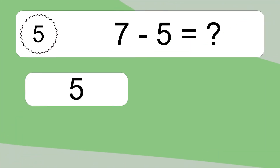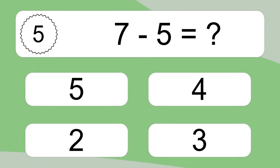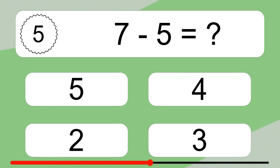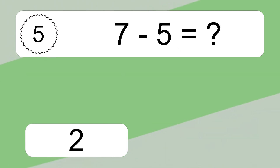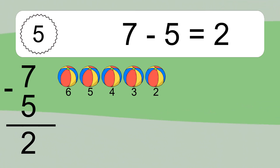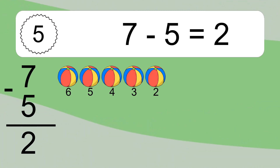7 minus 5 equals what? 7 minus 5 equals 2. Let's count it: 6, 5, 4, 3, 2.